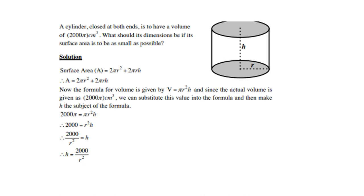Remember, this is a closed cylinder. So area is 2πr² + 2πrh. Now, the formula for volume is given by πr²h.